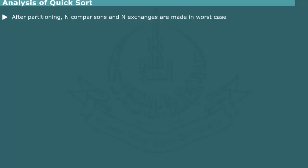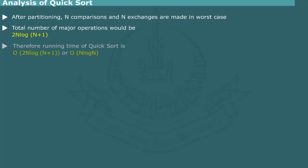After partitioning of array, we perform n comparisons and n exchanges in worst case. Thus, the total number of major operations involved in quicksort are 2n log n plus 1. We therefore conclude that the running time of quicksort is O(2n log n plus 1), or ignoring constants O(n log n). The logarithmic function n log n grows much slower compared to the quadratic function n square. Thus, quicksort is far too efficient compared to the quadratic sort methods named bubble sort, selection sort, insertion sort, and shell sort.